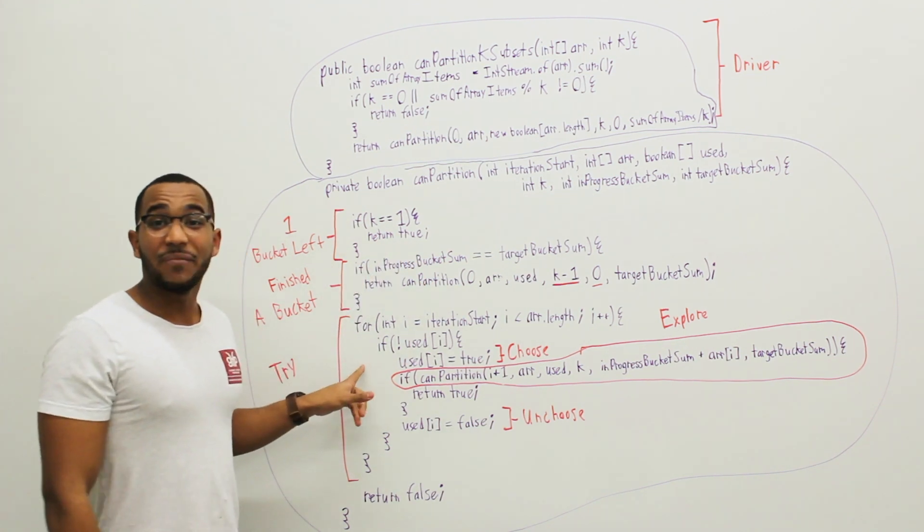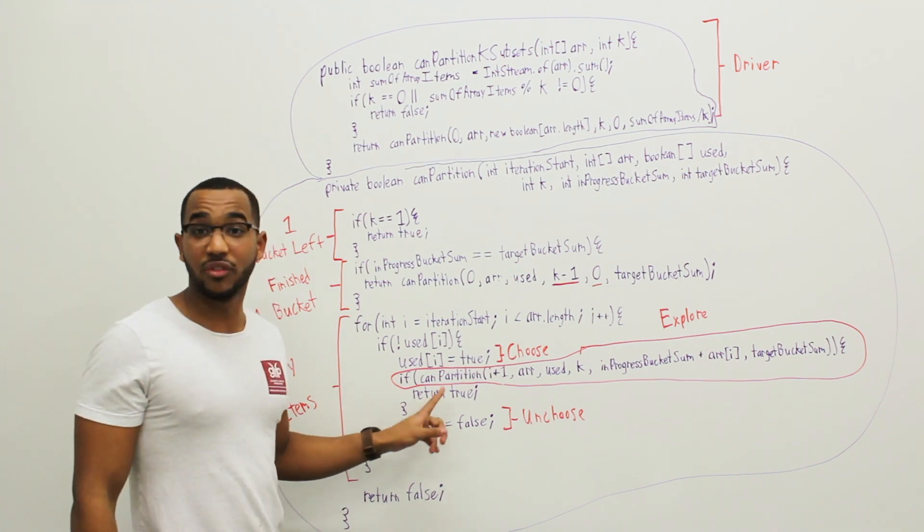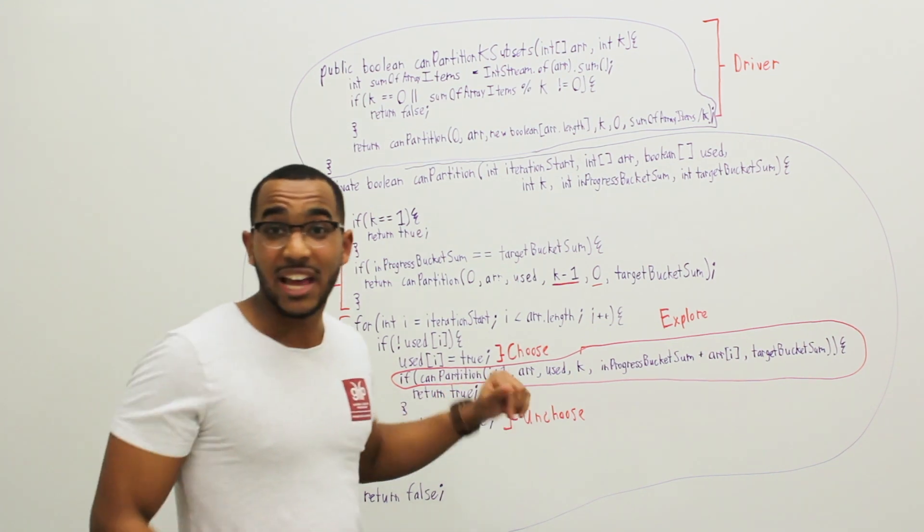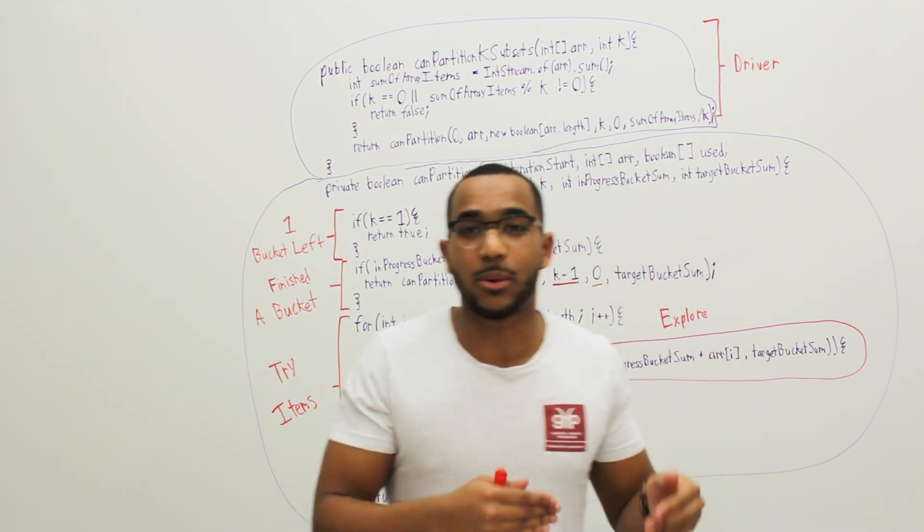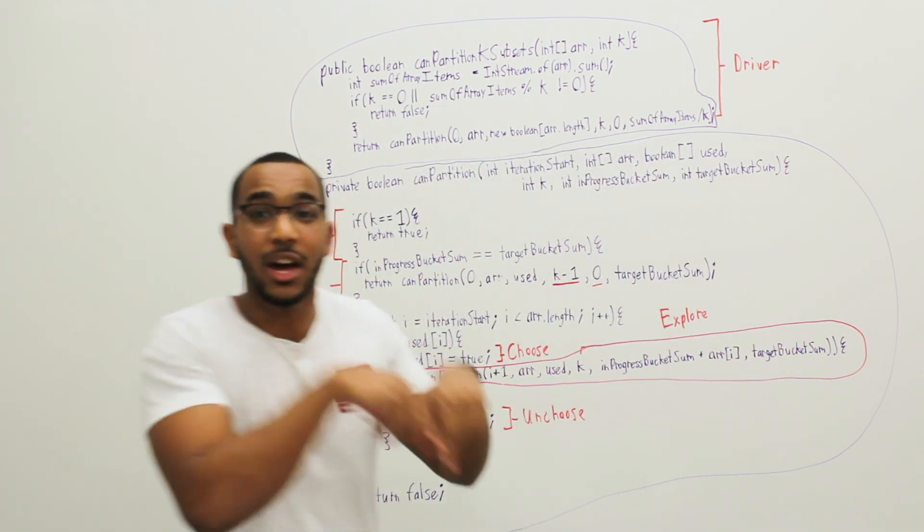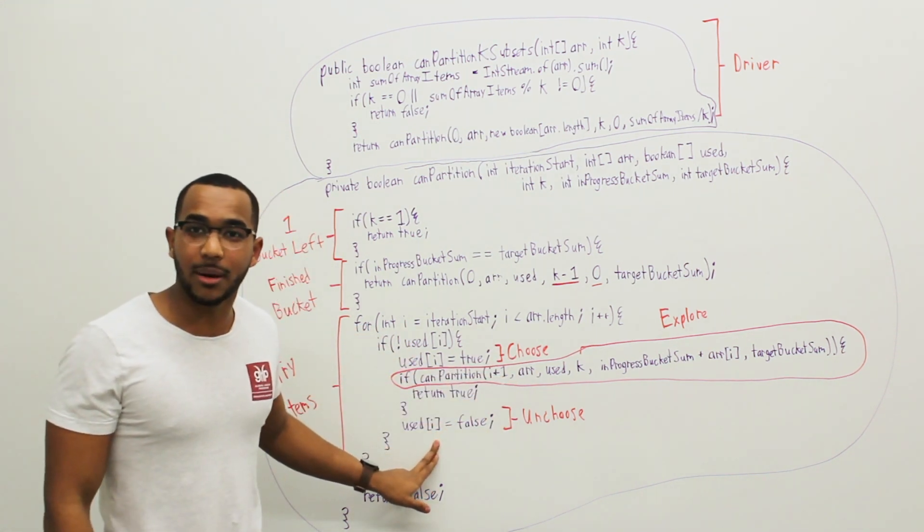So what this does is it explores all the possible placements. If this returns false, if a placement fails and we reach a position that we cannot partition from, we backtrack. We backtrack. And then we try another item in the same stack frame. And we unmark the item if it didn't work.